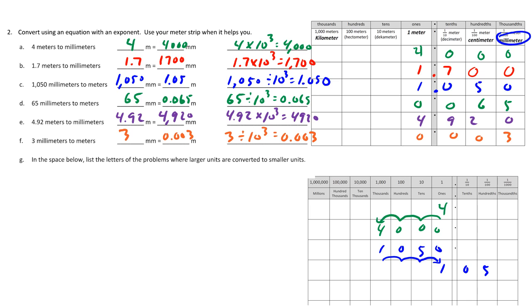On problem G, they're asking which problems have larger units converted to smaller units. Larger units going to smaller units are A, B, and E.